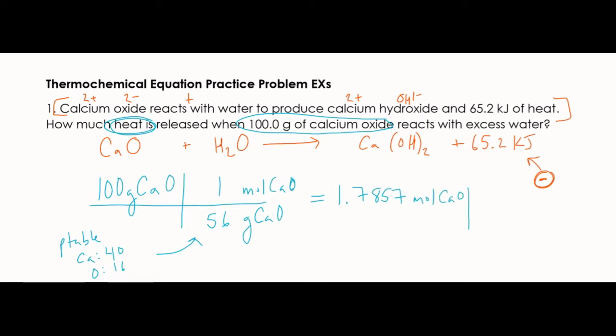Now that we have moles, we can actually get the heat. So same thing, diagonal matches. We want kilojoules on top. And these are just going to come from the equation. So we've got 1 mole of CaO, and then it is negative 65.2. We're just going to use our calculator and multiply the top two. And we're going to get negative 116.428. With sig figs, that would just be 3 sig figs. So that's going to be negative 116 kilojoules.